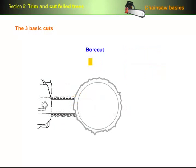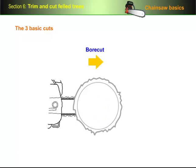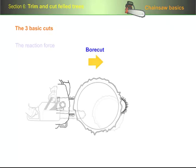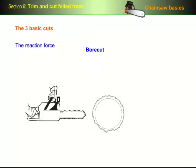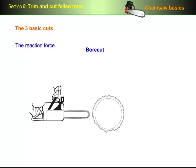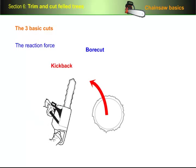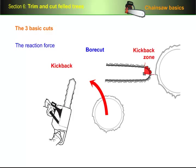The bore cut uses the nose of the bar to do the cutting, which makes it extremely risky if you don't do it properly. The reaction force that you need to be most careful of when you start the bore cut is kickback, because that's what will happen if you let the kickback zone on the nose come into contact first.